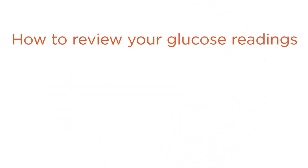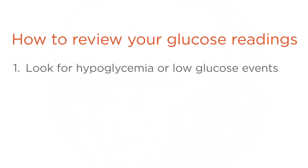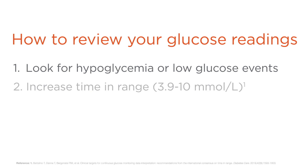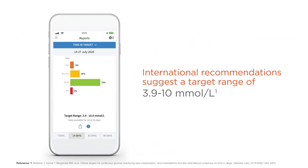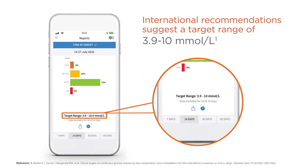Let's start by reviewing your glucose readings. First, you want to look for hypoglycemia or low glucose events. Second, you want to increase your time in range. Third, you want to reduce your glucose variability — those up and down waves. International recommendations suggest a target range of 3.9 to 10, or the individual target range given to you by your health care professional.